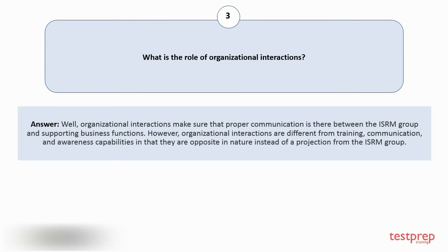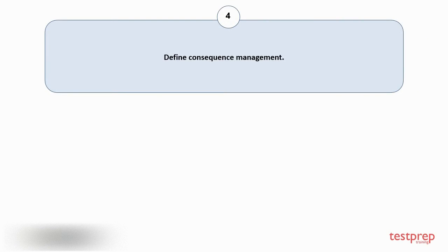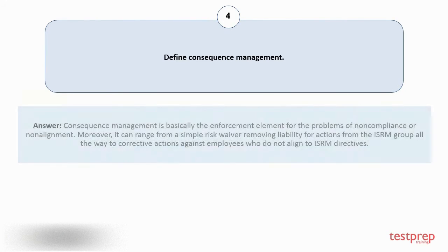Instead of a projection from the ISRM group. Question number four: Define consequence management. Consequence management is basically the enforcement element for problems of non-compliance or non-alignment. It can range from a simple risk waiver removing liability for actions from the ISRM group, all the way to corrective actions against employees who do not align to ISRM directives.